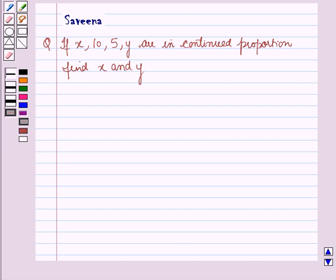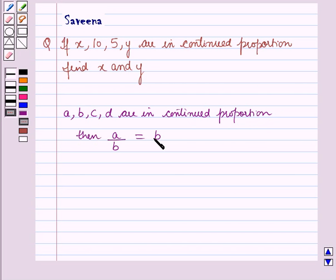Now, before starting the solution, we should know about the result of proportion and that is if A, B, C and D are in continued proportion, then A over B is equal to B over C is equal to C over D.